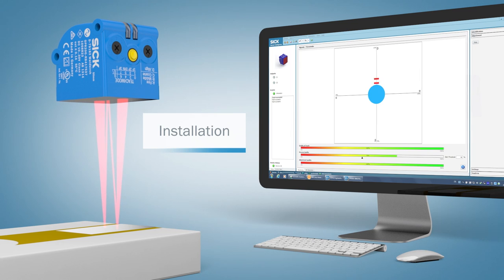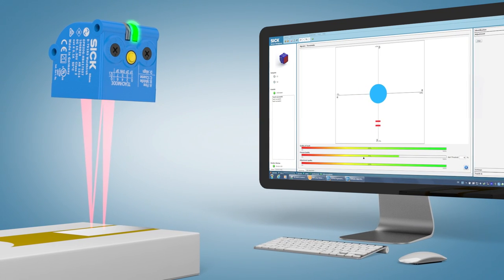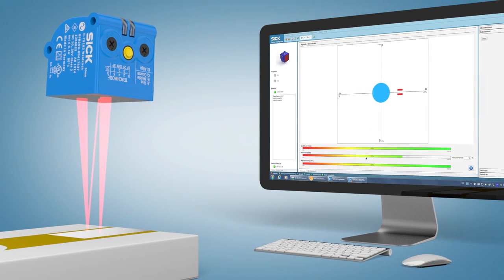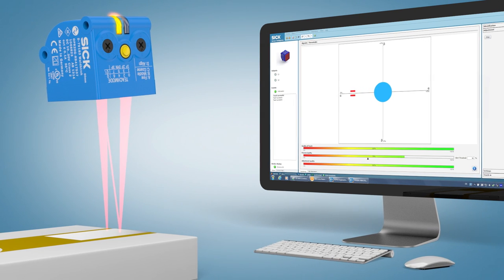The sensor's built-in alignment mode, or the crosshairs displayed on the SOPAS configuration software, can be used to support rapid trouble-free installation on the machine. This saves time and money.